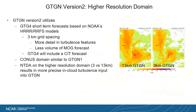We are also currently working on incorporating higher-resolution GTG short-term forecasts into GDGN based on the HRRR and in the near future the RRFS model, at three-kilometer grid spacing, which will also include a convectively induced turbulence forecast. Another benefit of going to higher resolution is that the NTDA information, which comes at two-kilometer resolution, will be incorporated more near its native resolution. Shown here is an example comparing GDGN based on the 13-kilometer RAP input versus GDGN based on the HRRR, showing quite a bit more fine structure at higher resolution.